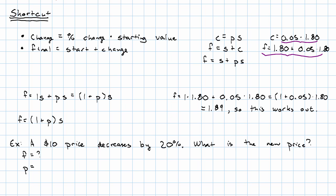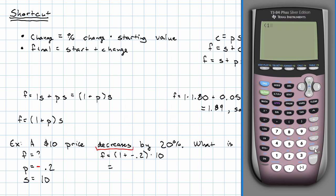The percent change, because this is a decrease, we're going to say the change is negative. 20% is 0.2. The starting price was $10. So my final price will be 1 plus negative 0.2 times 10, which gives me 8.